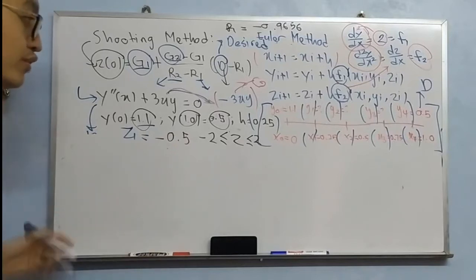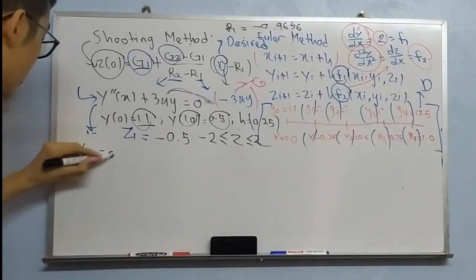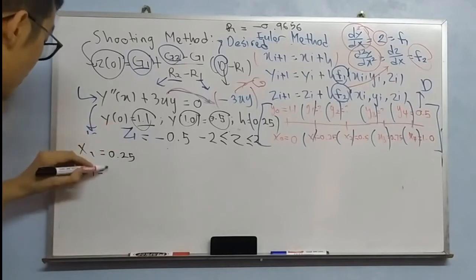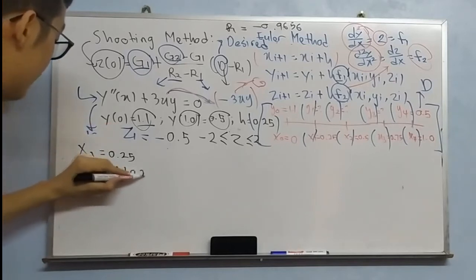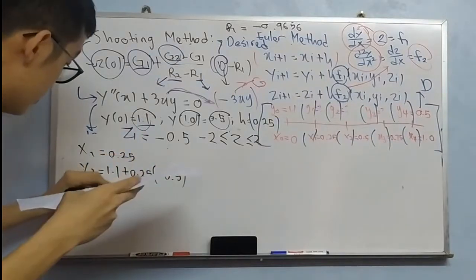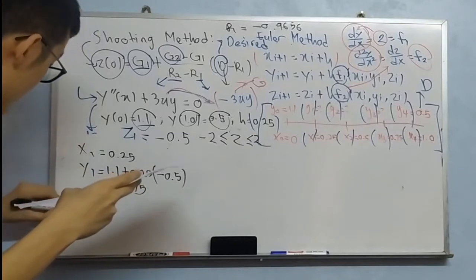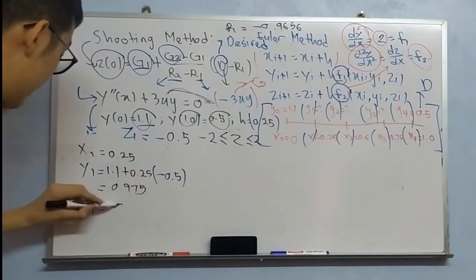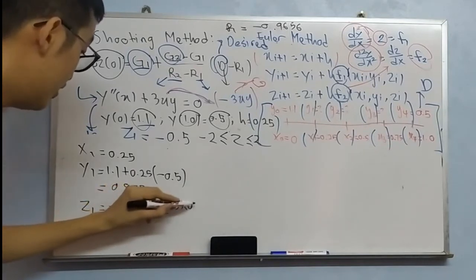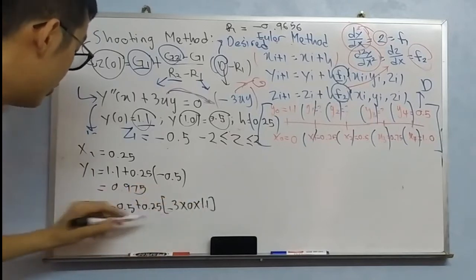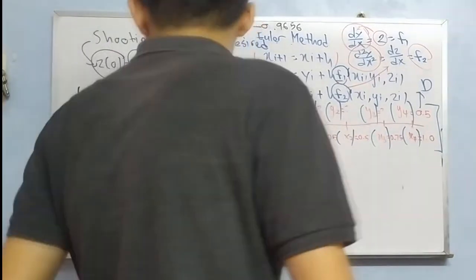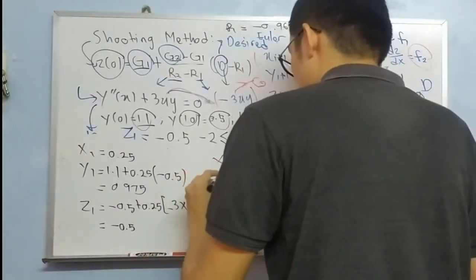So as usual you proceed with X1, 0.25. Y1: 1.1 plus 0.25, the value of Z, function 1. Negative 0.5 plus 0.25, negative 3 X1. So you will get the same answer, negative 0.5 for Z1. So again we repeat the same procedure for X2, Y2.